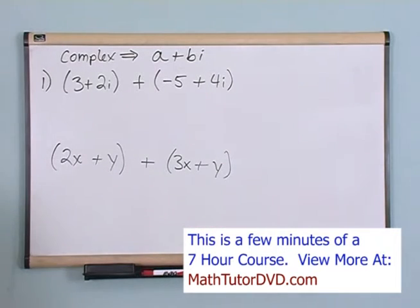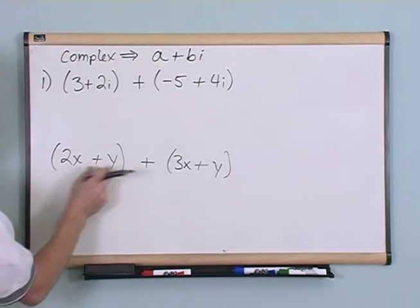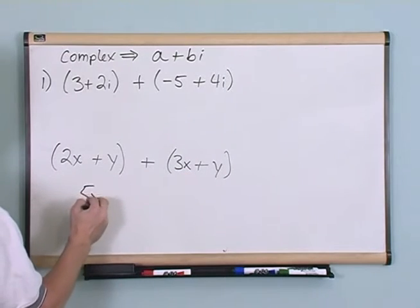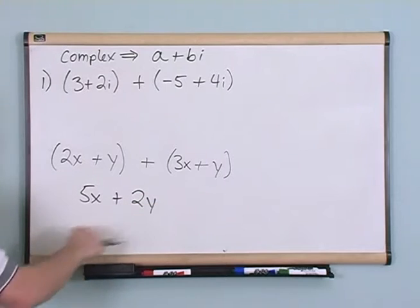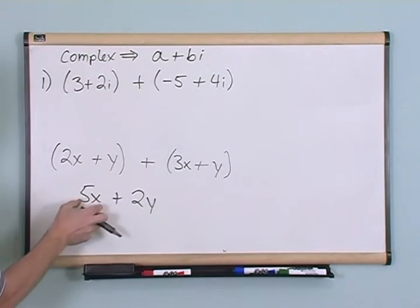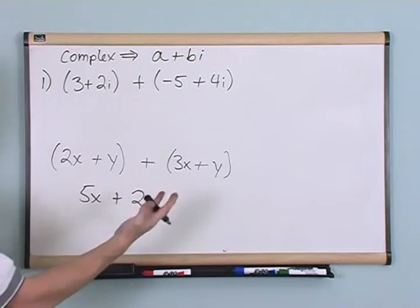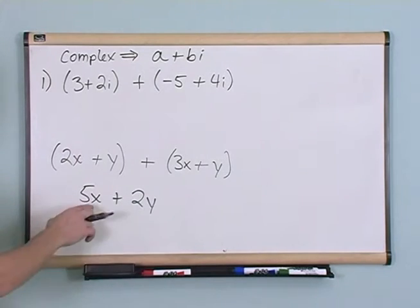Well, you should know how to do that. You add the like terms. 2x plus 3x is 5x. y plus y is 2y. You know from your algebra that you can't do anything more with this because you've got some multiple of x, some multiple of y, and you just can't add those anymore. They're different things.